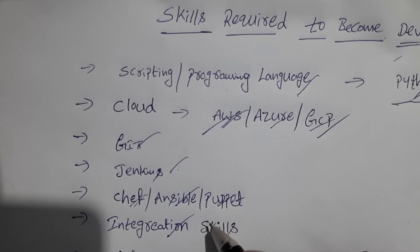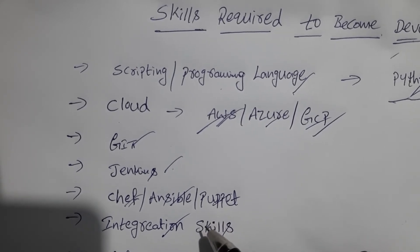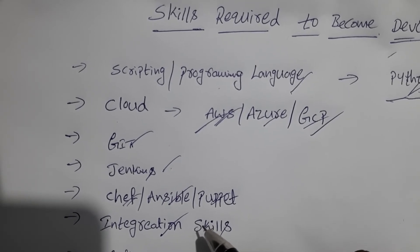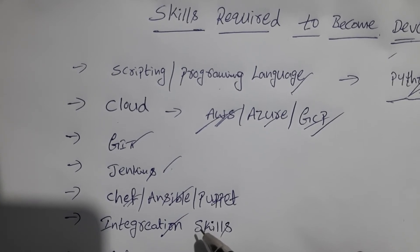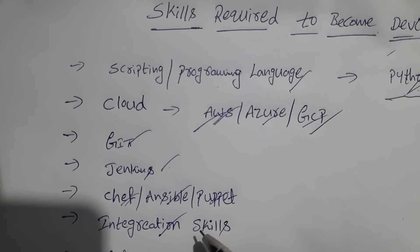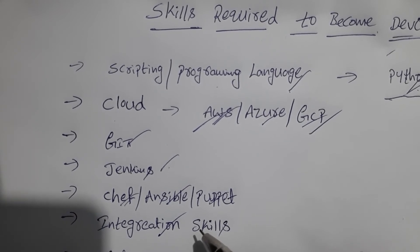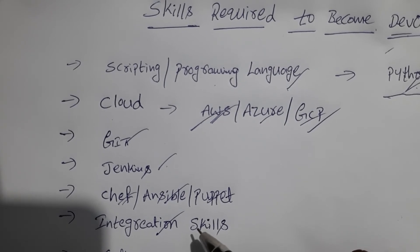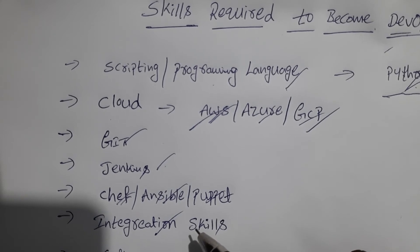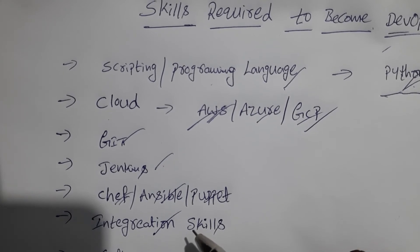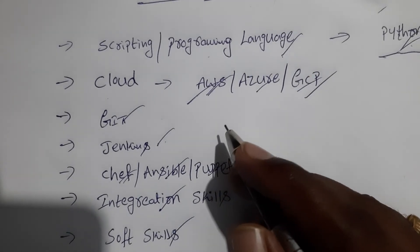The next one is integration skills. As a DevOps engineer, you should be able to use all your expertise to integrate all the mentioned skills to create an environment that is fully automated and integrated. The main goal is zero manual intervention from source code management to deployment — that is Continuous Integration, Continuous Delivery, and Continuous Deployment.